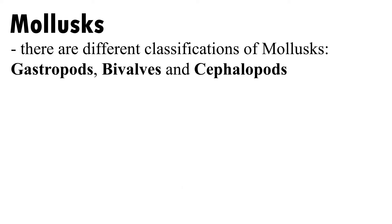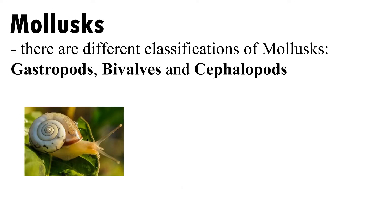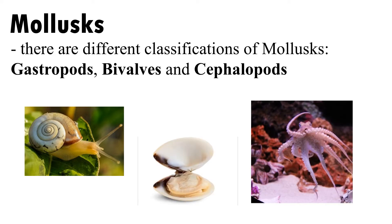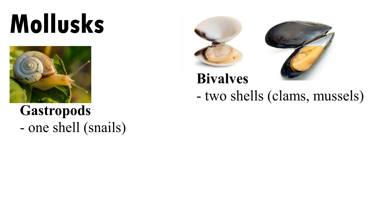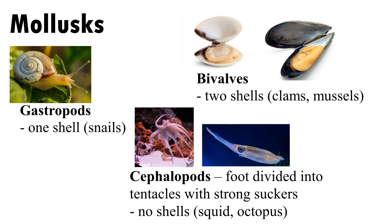There are different classifications of mollusks: gastropods, bivalves, and cephalopods. Gastropods have one shell, like snails. Bivalves have two shells, like clams and mussels. Cephalopods have feet divided into tentacles with strong suckers and no shells, like squid and octopus.